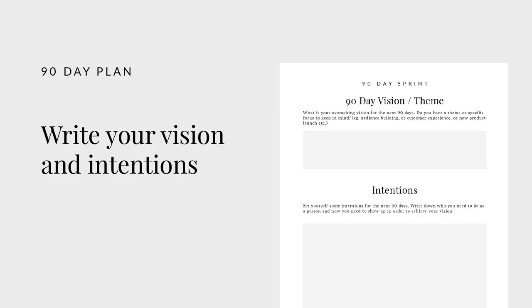The next step is to set a vision or a theme for the next 90 days. Think about where you want to be — in terms of yourself and your business — in three months' time, and write that down clearly. You could also set a theme to keep you focused. For example, you could set a theme of improving engagement or customer relationship building, or maybe you've got a launch within the next 90 days that you want to really focus on, making that your theme.